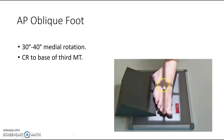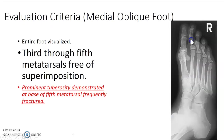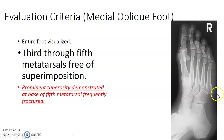On the AP oblique, you're going to rotate 30 to 40 degrees medial rotation with the same centering. To evaluate this view for positioning, the third, fourth, and fifth metatarsals are now free of superimposition, and the first and second are now superimposed. There are also open joint spaces, and the fifth tuberosity is the one most often fractured.